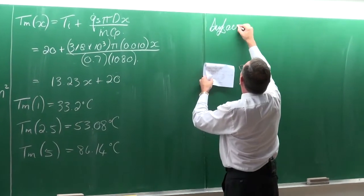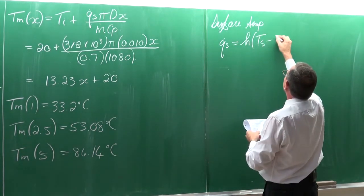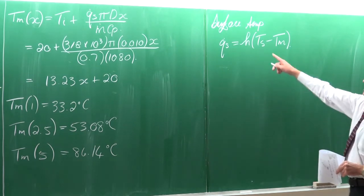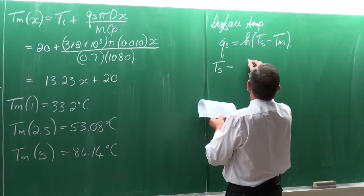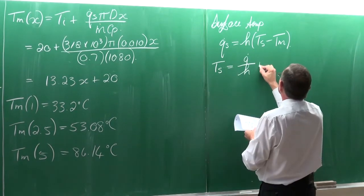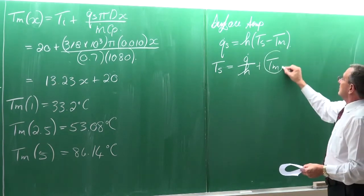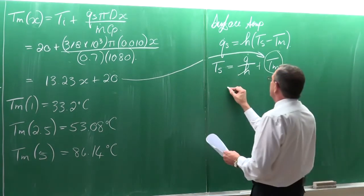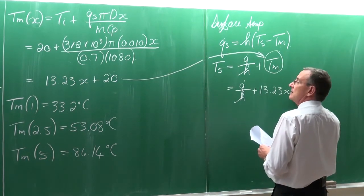Now let's determine the surface temperatures. The heat flux equals the heat transfer coefficient multiplied by Ts minus Tm, where Tm is a function of x. We want to know Ts, so we can write Ts equals the heat flux divided by the heat transfer coefficient plus Tm as a general equation. So we can write it as the heat flux divided by the heat transfer coefficient plus 13.23x plus 20. Now we can solve the surface temperature at any point x.